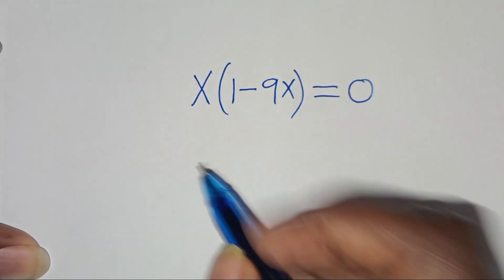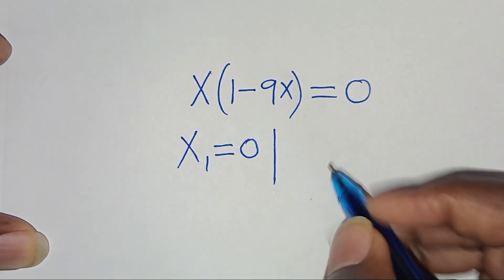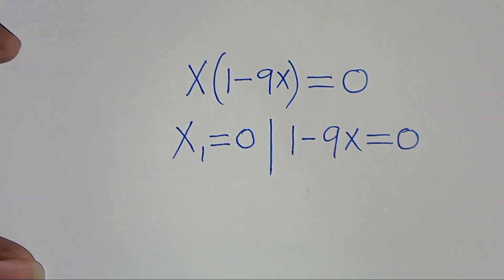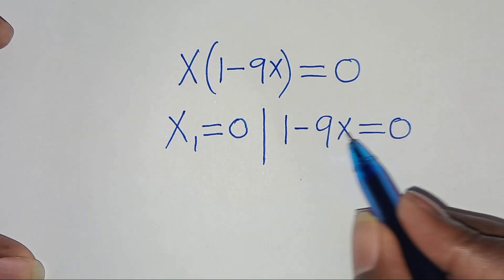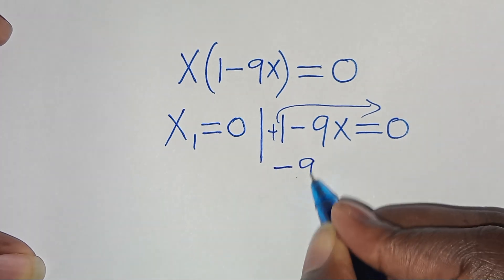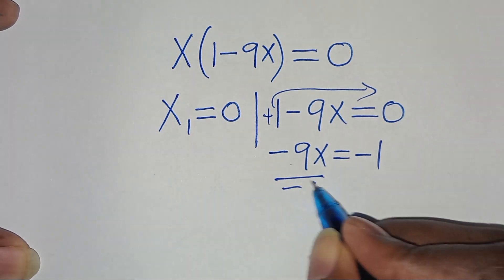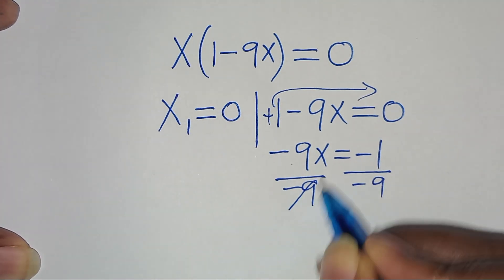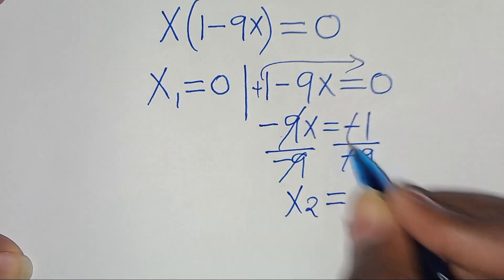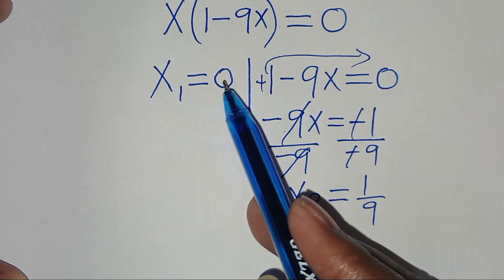This implies we have two parts: x₁ equals 0, and the second part 1 minus 9x equals 0. Solving for x: we take 1 to the right hand side, giving minus 9x equals minus 1. Dividing both sides by minus 9, we get x₂ equals 1 over 9. So we have two values: x₁ equals 0 and x₂ equals 1 over 9.